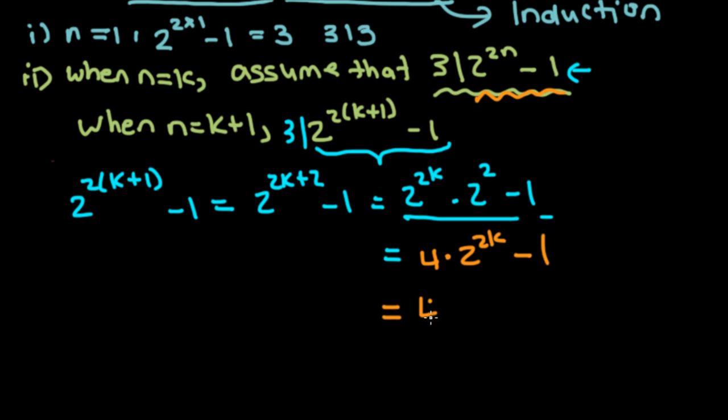So we're going to rewrite this as 4 times 2 to the 2k minus 1. So since from here we already know that 2 to the 2k minus 1 is divisible by 3, we know that this term right here is divisible by 3. But in order to make this look like this, we have 4 times 2 to the 2k minus 4.